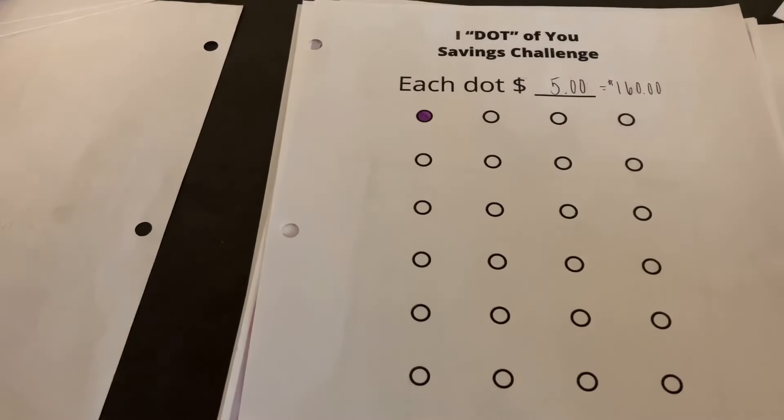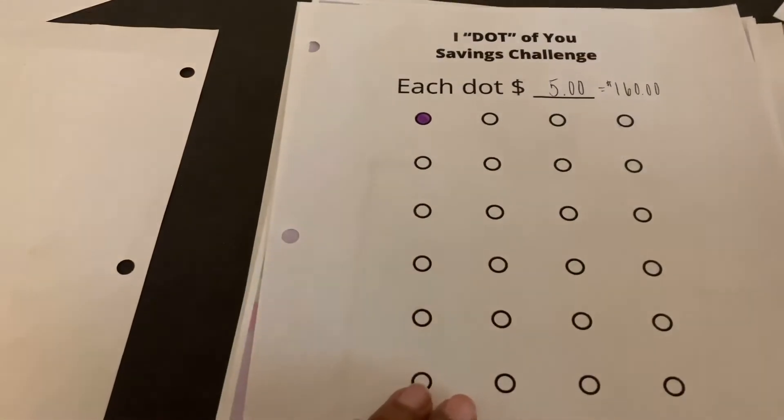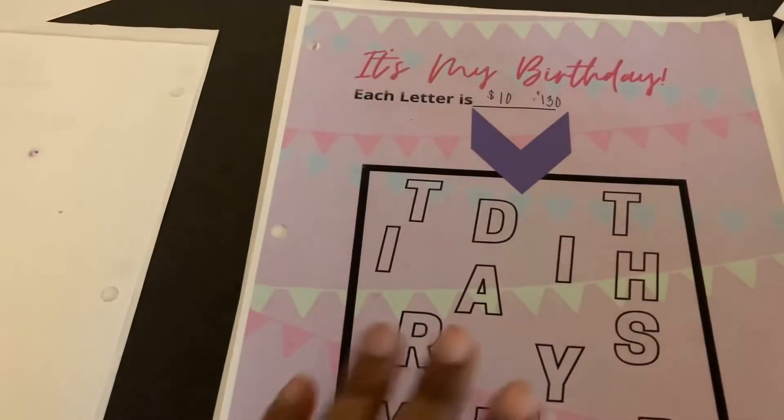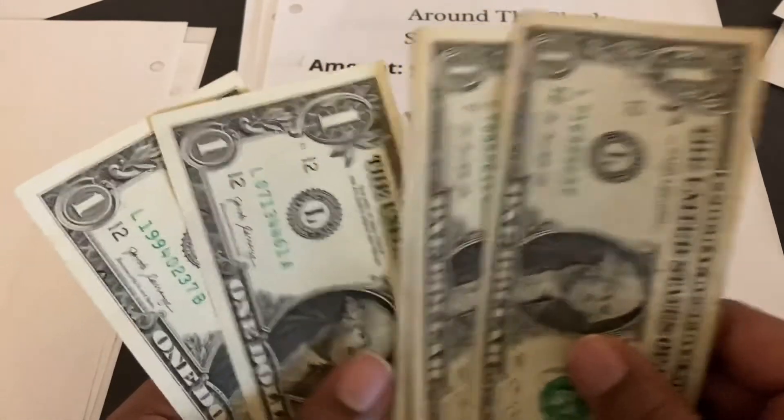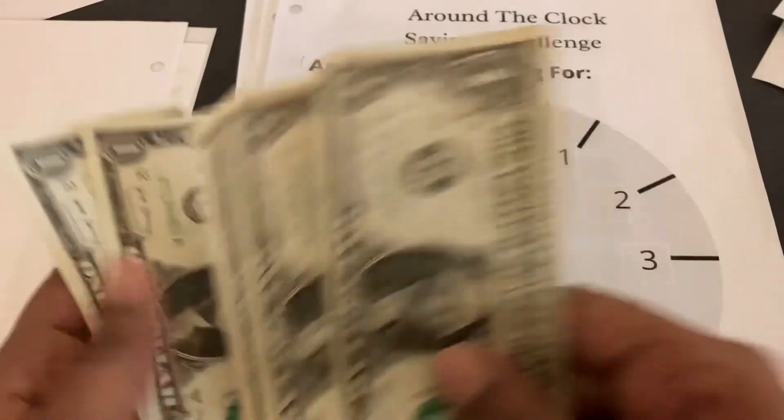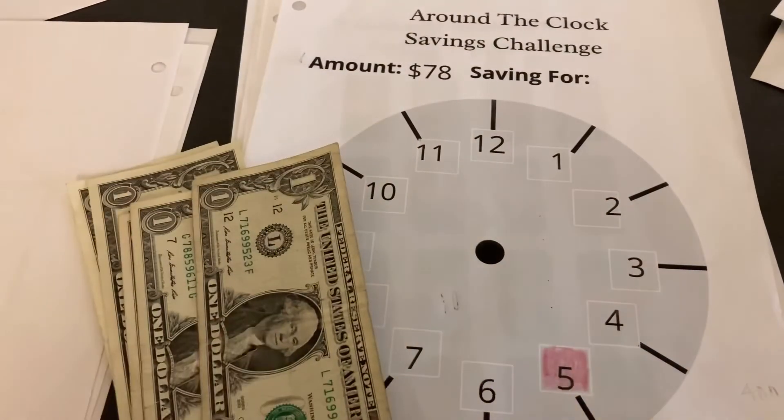So now I only have $1, $2, $3, $4, $5, and the only challenge that this $5 can go to would be the Around the Clock Savings Challenge. And I think I'm going to split it, so I have $2 and $3. So I'm going to go ahead and color it in.